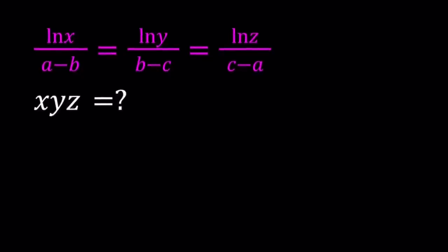Hello everyone. In this video, we're going to be dealing with a logarithmic system. We have ln x over a minus b divided by ln y over b minus c, and that is equal to ln z over c minus a. a, b, c are constants, and they are all different. And we're going to be evaluating the expression x, y, z.